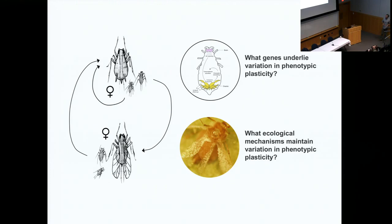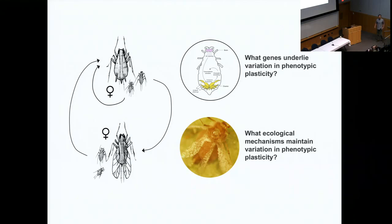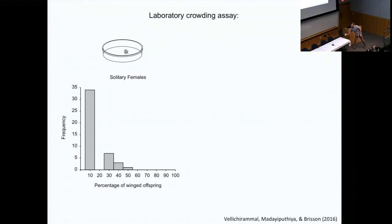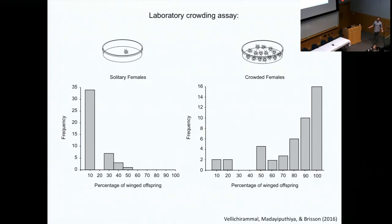Today I'm going to use this system to tell you about two different stories. First, how much variation is there in a natural population in terms of this plastic wing response, and what genes underlie this variation? Then we're going to talk about what ecological mechanisms might be maintaining this variation — spoiler alert, there's a lot of variation. Our standard laboratory crowding assay involves taking aphids from a single genotype, rearing them at low densities on a plant, then crowding them in a petri dish for 24 hours, and counting the offspring to determine the percentage that become winged.